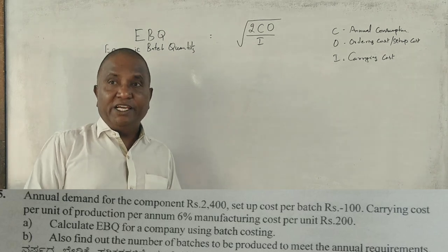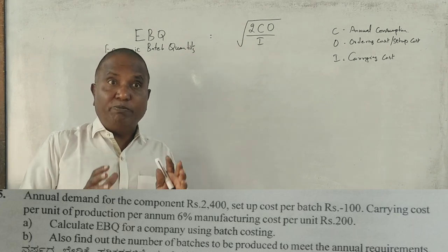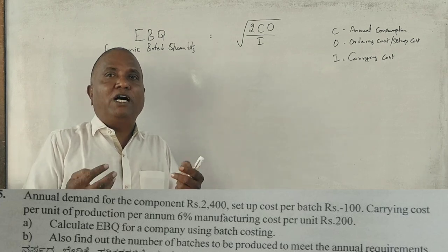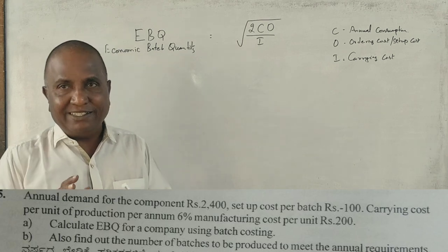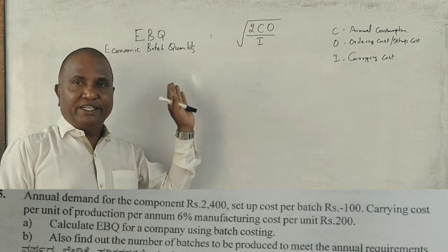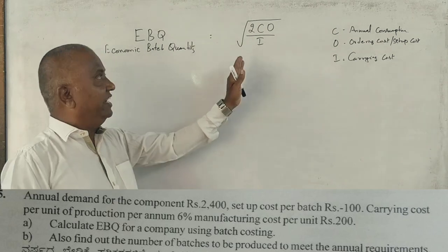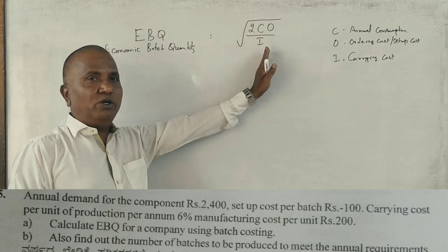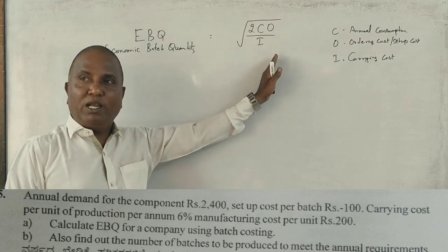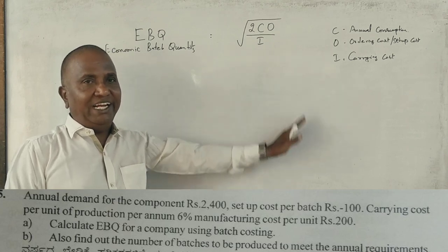If you manufacture a certain batch quantity, it will be cheaper for you. That is, square root of 2CO divided by I. 2 is constant number, C is annual consumption, O is ordering cost, I is carrying cost.